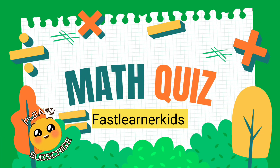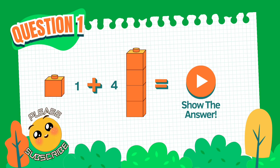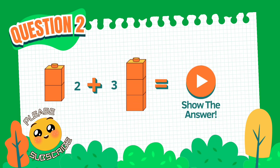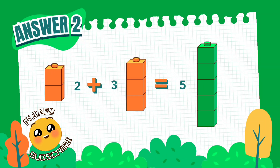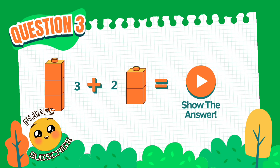Shalom children! Let's learn about math: increase in addition and also subtraction. 1 plus 4 equals 5. Add 1 with the 4 block, you get 5. 2 blocks plus 3 blocks equals 5. 2 plus 3 equals 5. 3 plus 2 — let's add all the blocks together: 3 blocks plus 2 blocks.